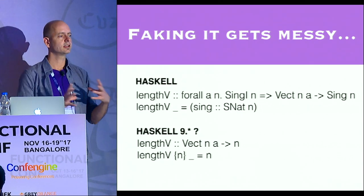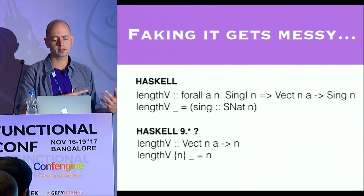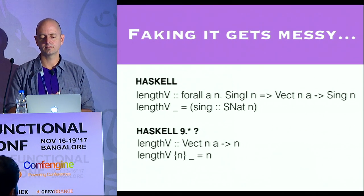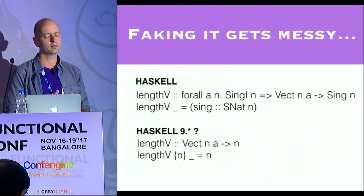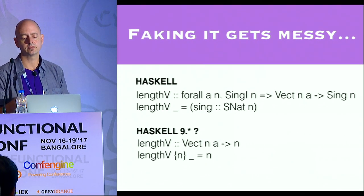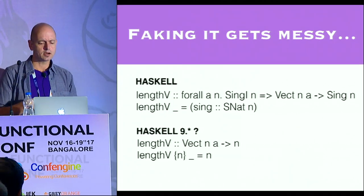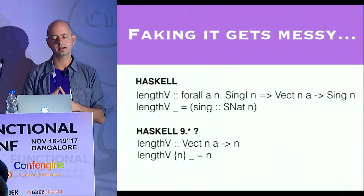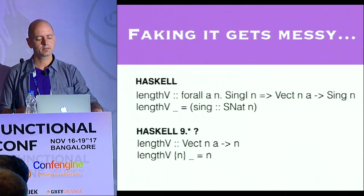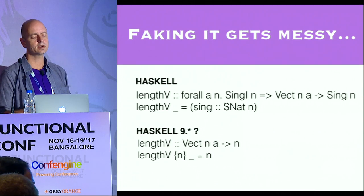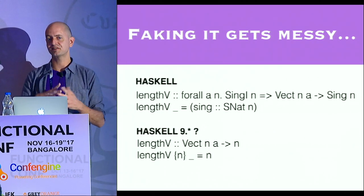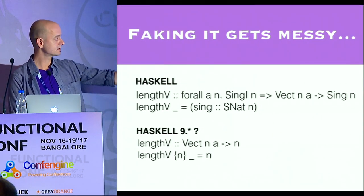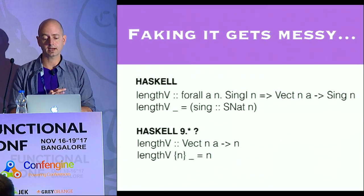Haskell is absolutely heading in that direction. There are experimental extensions now that go well towards this, though it's still a razor's edge. In 2015, Richard Eisenberg, under the supervision of Stephanie Weirich — a big Haskell player — wrote a thesis that showed exactly how to make Haskell more dependently typed. There's a lot of work to be done. It's expected that in Haskell 9 things will get more like that, and we will really be freed from hacking with singletons.